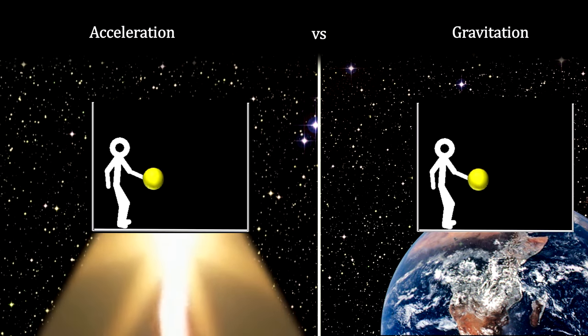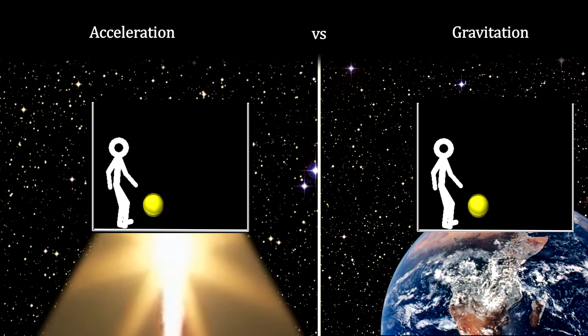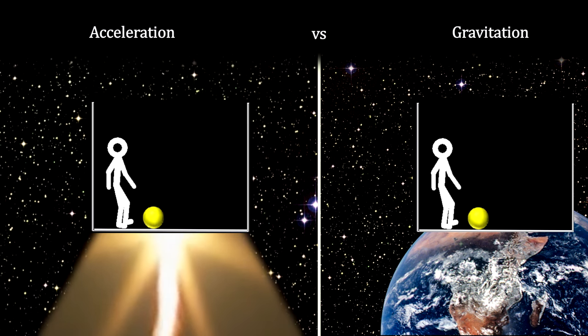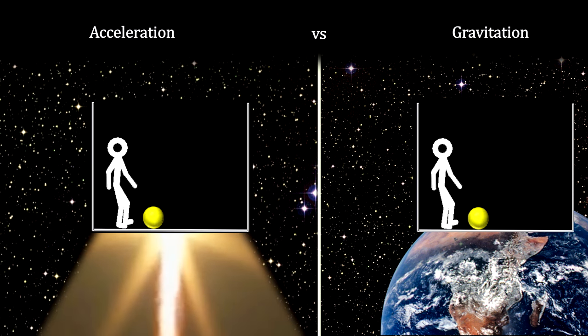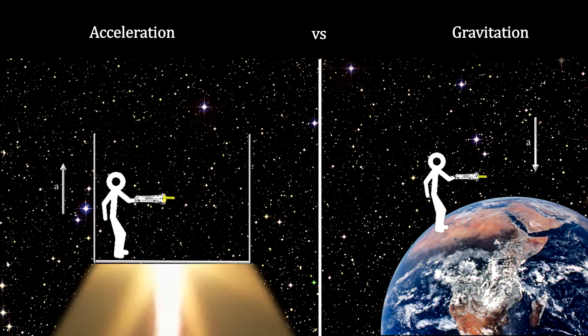Einstein felt that before you can declare two things equal, you need to demonstrate an equality in the real nature of the two concepts. In other words, we can only say they're equal after their real nature is found to be equal. His equivalence principle does just that.